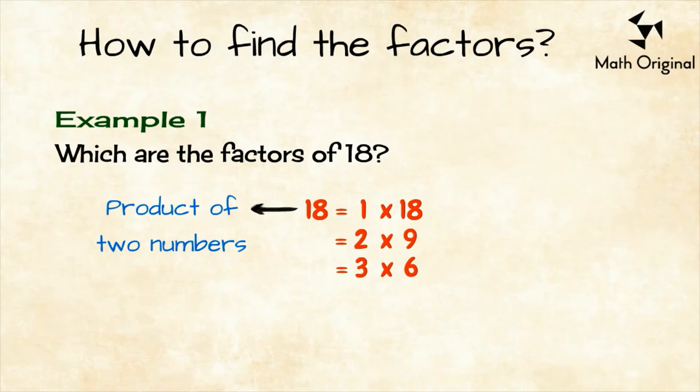So, all the factors of 18 are 1, 2, 3, 6, 9, and 18.